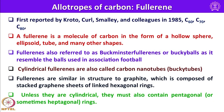Another important allotrope of carbon is fullerene. It was first reported by three scientists — Kroto, Curl, and Smalley — in 1985, and they showed the presence of C60, C70, as well as C80. A fullerene is a molecule of carbon in the form of a hollow sphere resembling a football, or it can be an ellipsoid or a tube. Fullerene is also referred to as Buckminster fullerene or buckyballs. Cylindrical fullerenes are also called carbon nanotubes or buckytubes. Fullerenes are similar in structure to graphite but unless cylindrical they must also contain pentagonal or sometimes heptagonal rings.